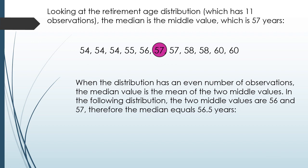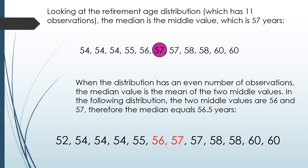Now, when the distribution has an even number of observations, the median value is the mean of the two middle values. In the following distribution, the two middle values are 56 and 57. So 56 plus 57 divided by 2 is equal to 56.5 years. Therefore, the median is 56.5 years.